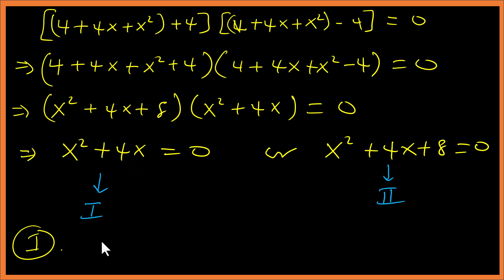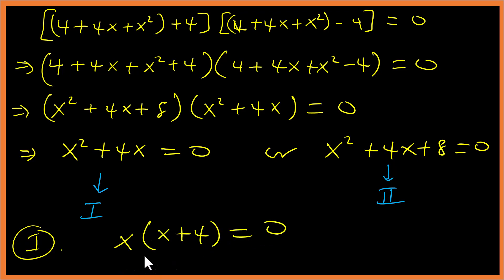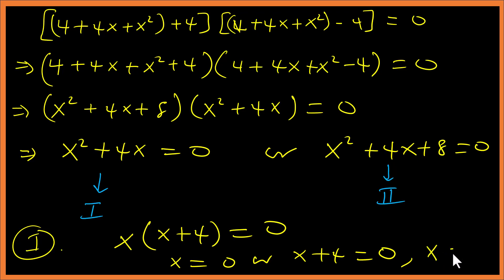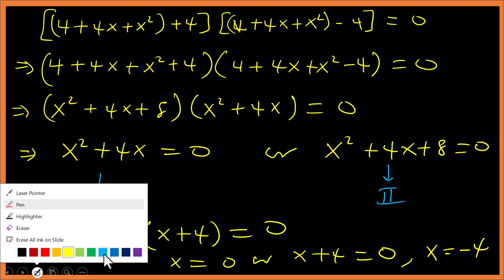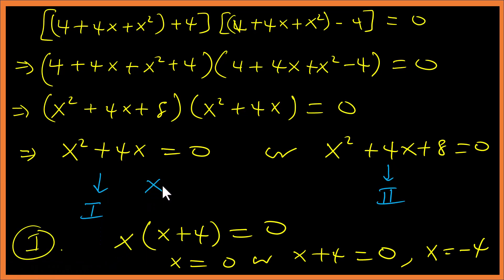From equation I, x² + 4x = 0. We can take x out: x(x + 4) = 0. So we have x = 0, or x + 4 = 0 giving x = −4. We now have two solutions: x = 0 and x = −4.